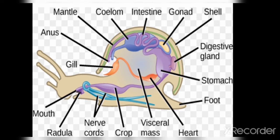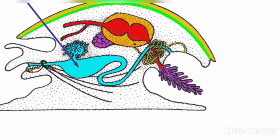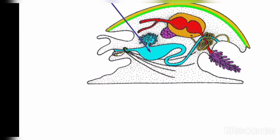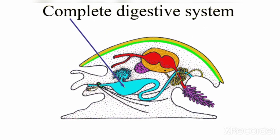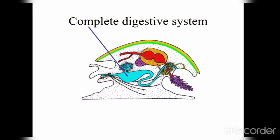They have a heart present, as you can see in the diagram, which performs the pumping function. Regarding excretion, they have metanephridia, which collect waste material and release it outside. You can see in the diagram a tube-like yellow-colored structure, which represents the metanephridia.